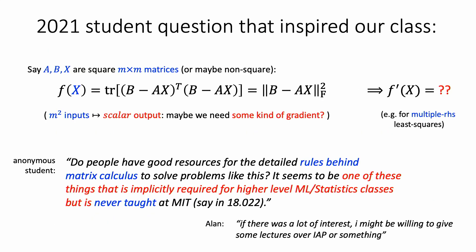This was the question posed by an anonymous student on the forum. They had the function trace of (B − AX)ᵀ(B − AX) — that's the squared Frobenius norm — and asked: how do you differentiate this? Do people have good resources for the rules behind this? It seems to be one of those things implicitly required for higher-level statistics and ML classes but never taught at MIT. With m² inputs and a scalar output, you want some kind of gradient, and indeed this is exactly the function you'd want to differentiate to solve multiple-right-hand-side least squares.